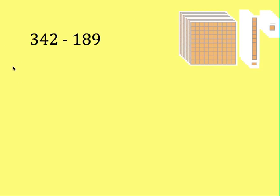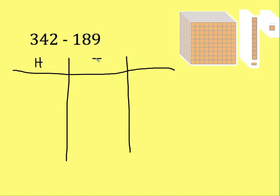Now to help me stay organized I like to draw my place value chart. So I start with my hundreds, and then next to that you have your tens, and then on the end you have your ones.